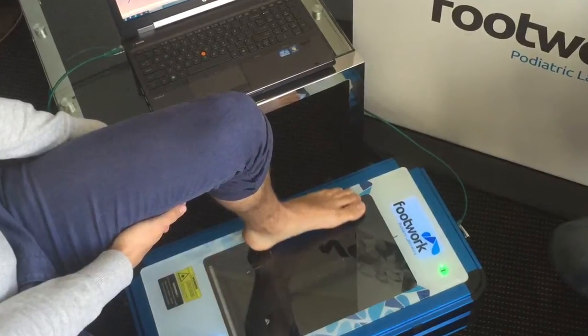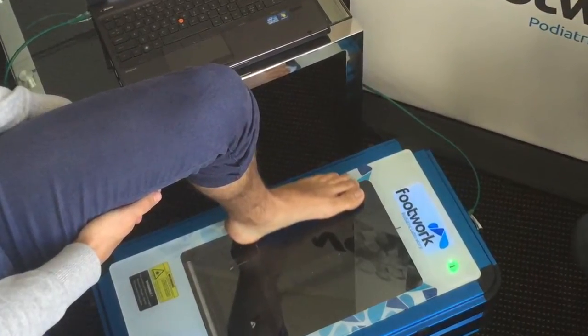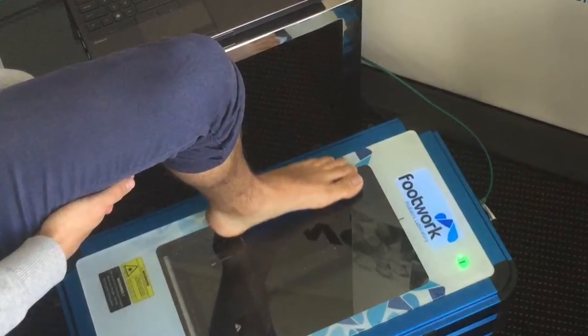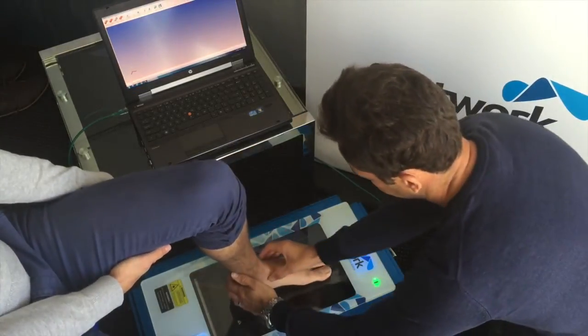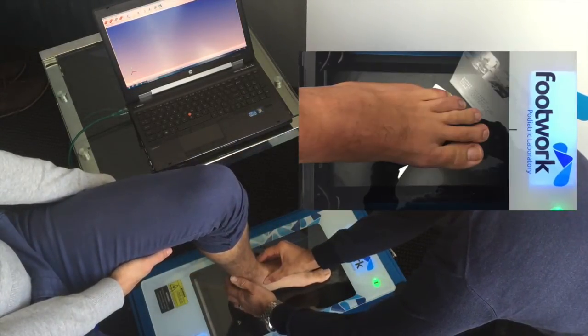Okay, so the key points when taking your scan. Firstly, reduce any direct light reflecting off the scanner. Then align the foot with the midline of the scanner and the second toe.